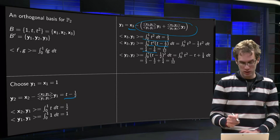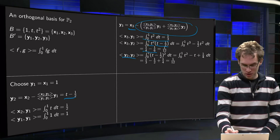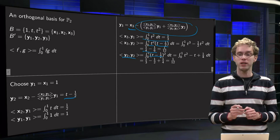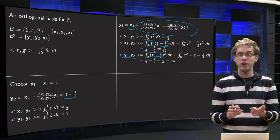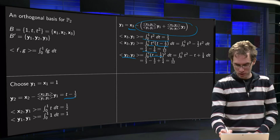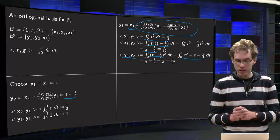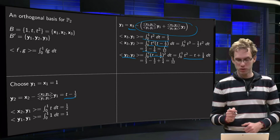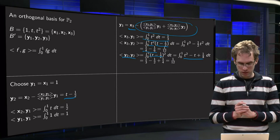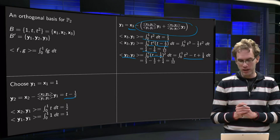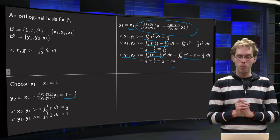Then the last inner product we need is y2 inner product y2, so the new y2, so that equals t minus one half times t minus one half squared. Work out the brackets, so t squared minus double product minus t plus one quarter, and integrate: t squared yields 1 over 3, minus t minus 1 over half, and 1 over 4 yields 1 over 4, and add everything up. We get 4 over 12 minus 6 over 12 plus 3 over 12, and again, accidentally, same: 1 over 12.